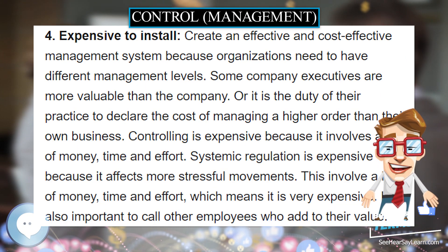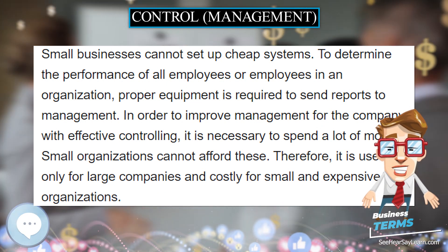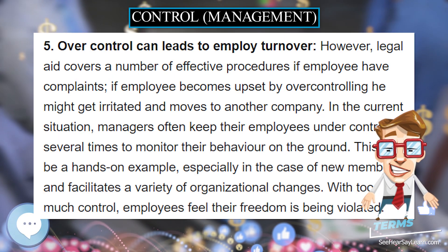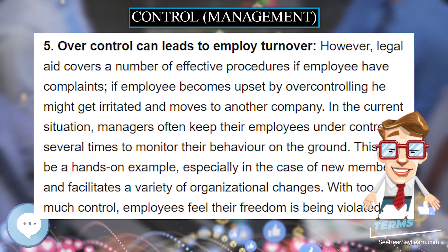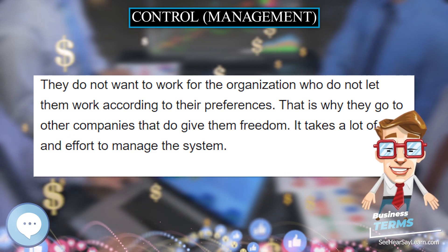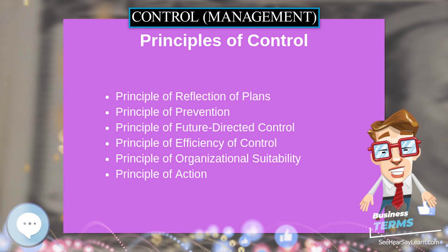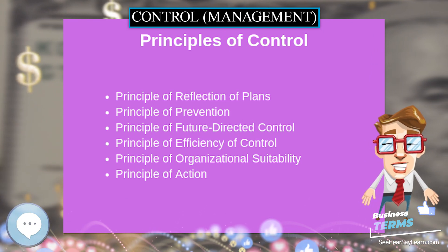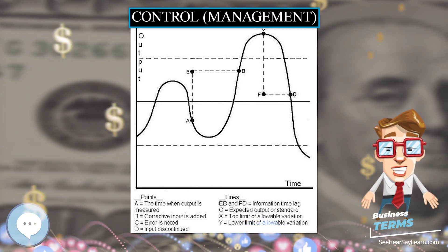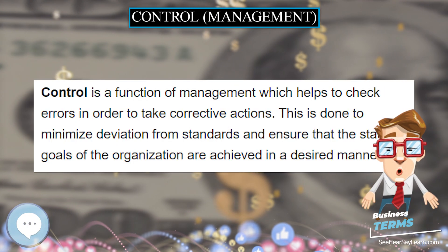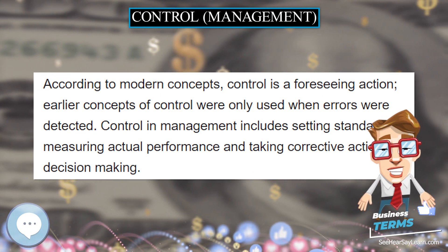Step 4: Analysis of the Cause of Deviations — managers must determine why standards were not met. This step also involves determining whether more control is necessary or if the standard should be changed. Step 5: Taking Corrective Action — after the reasons for deviations have been determined, managers can then develop solutions for issues with meeting the standards and make changes to processes or the standard. Step 6: Control may be grouped according to three general classifications.